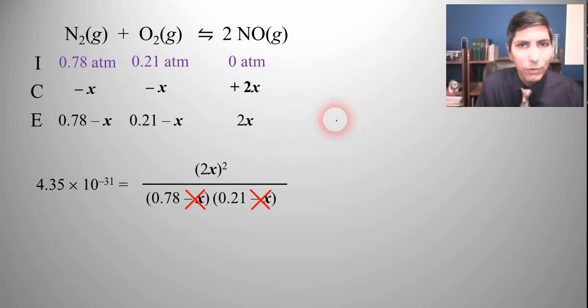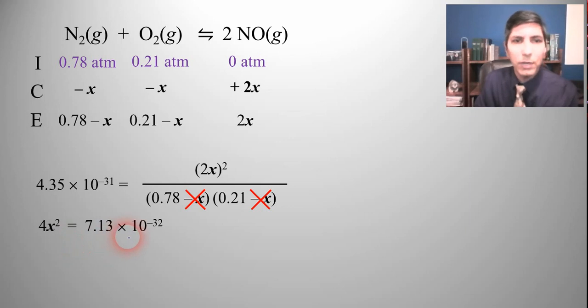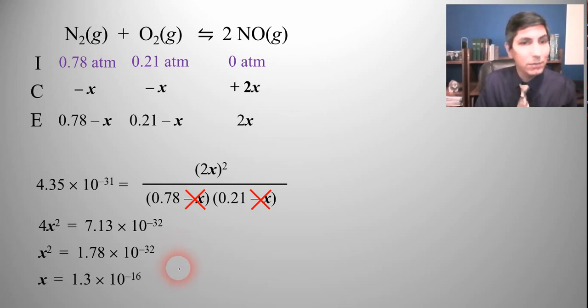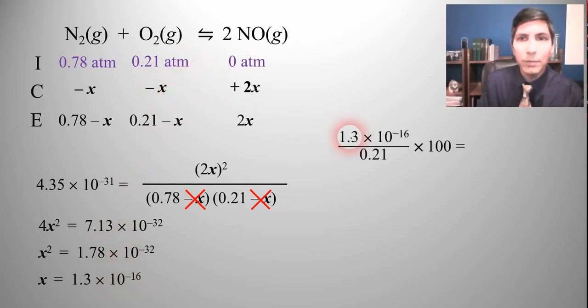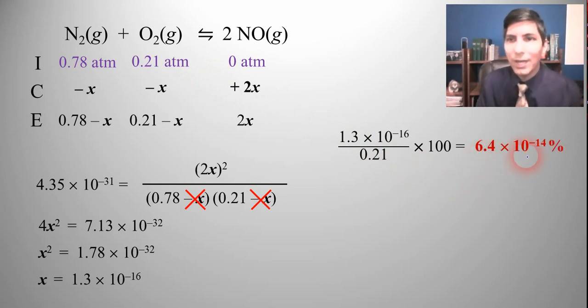Let's cross multiply now. So 2x quantity squared is 4x squared and then multiply this number times that times that and I get 4x squared equals 7.13 times 10 to the negative 32nd. Divide both sides by 4 and take the square root and the answer is that x equals 1.3 times 10 to the negative 16th. Now let's just double check to make sure that it is less than 5% of what it's being subtracted from. So I'm going to take 1.3 times 10 to the minus 16 divided by 0.21 and it turns out that that is 6.4 times 10 to the negative 14th percent. So that's way less than 5% so we're certainly good.